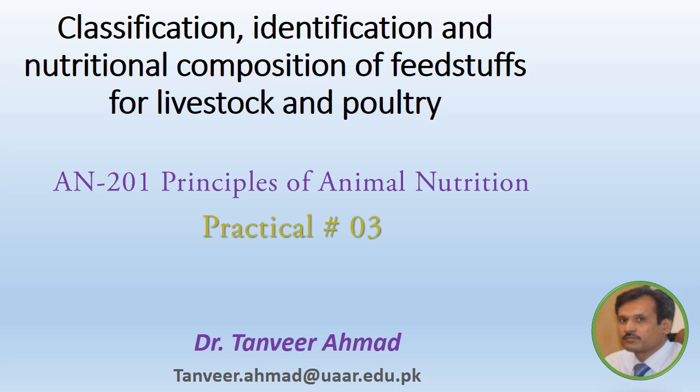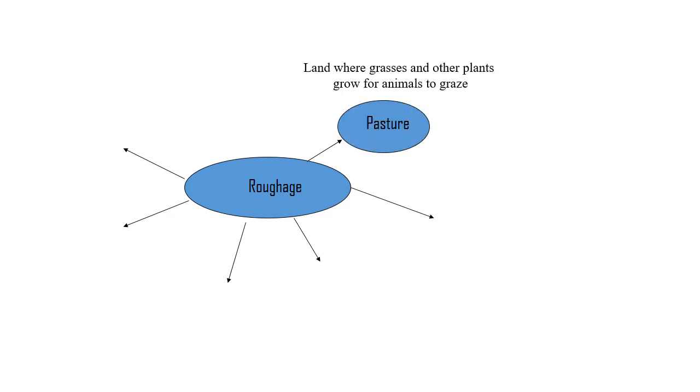This is Practical Number Three: Principles of Animal Nutrition. This is a continuation of the previous practical on classification, identification, and nutritional composition of feedstuff for livestock and poultry. During the previous practical we performed classification on a general basis — how feedstuffs are classified and what the different classes are. In this practical we will perform classification of roughages, discuss different types of fodders, perform their identification, and consider the nutritional composition of different forages and fodder crops.